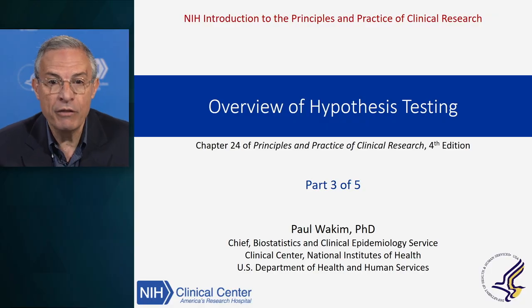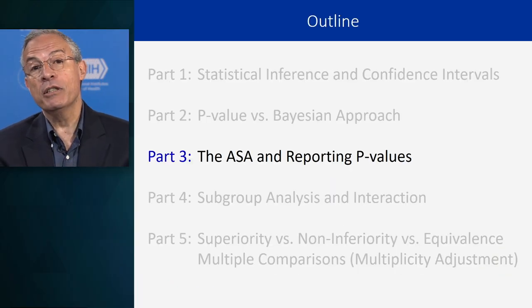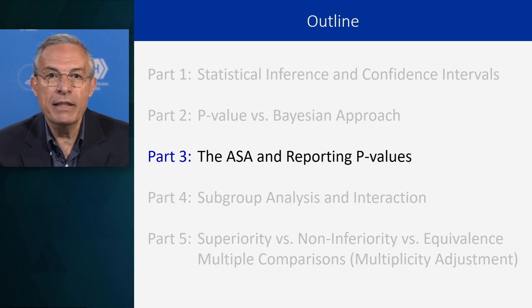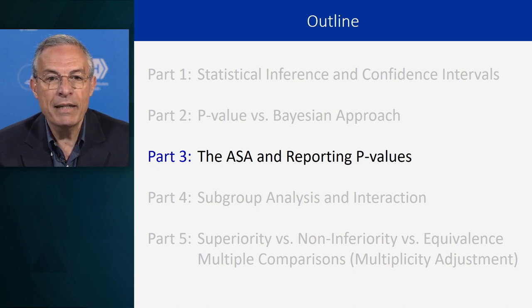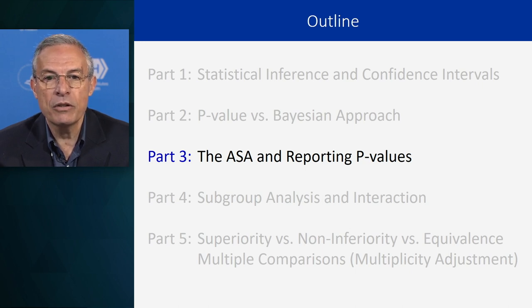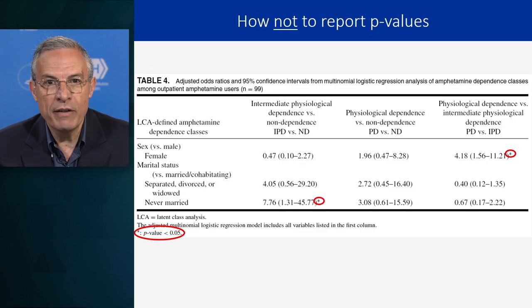Hello, I'm Paul Joachim. I'm Chief of the Biostatistics and Clinical Epidemiology Service at the NIH Clinical Center. This is part three of hypothesis testing. In this part, we're going to talk about something really exciting that is happening right now, spring 2019. It's about the ASA and the reporting of p-values. The ASA stands for the American Statistical Association. Let me start with the reporting of the p-value.